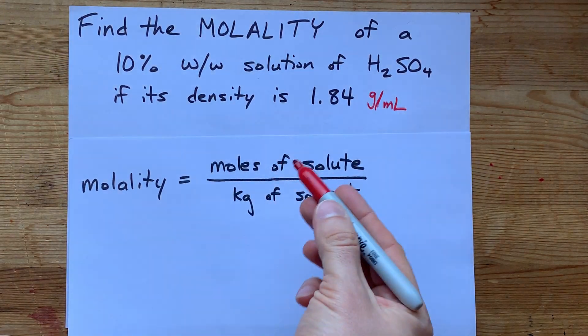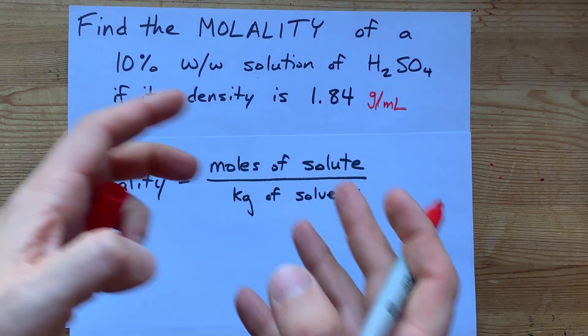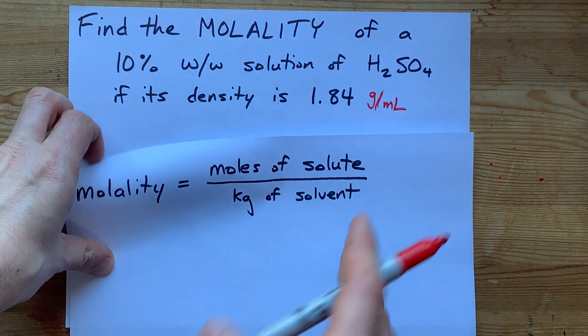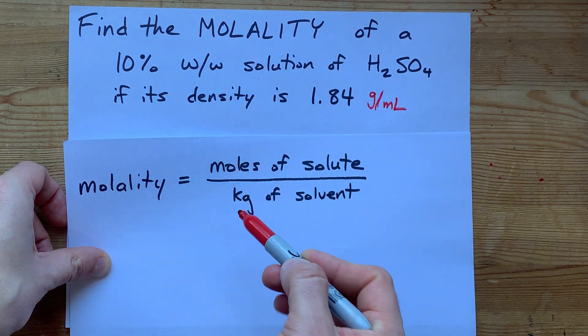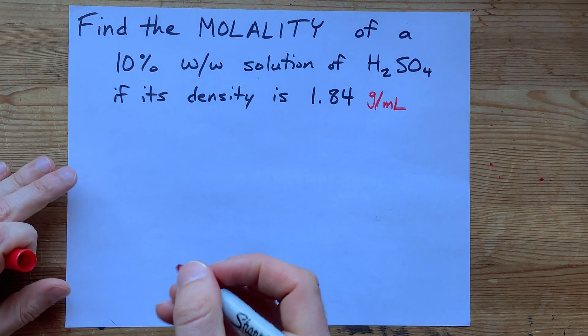Molality is moles of solute divided by kilograms of solvent, and it doesn't matter how big the sample size is here as long as you're counting the number of moles that happen to be in a certain amount of the solvent.